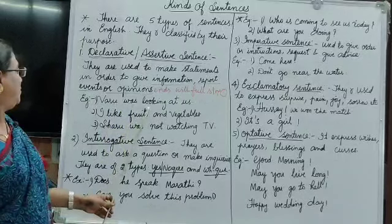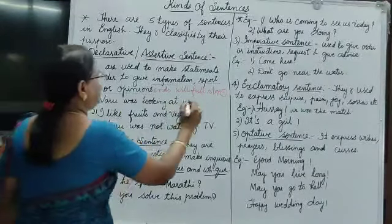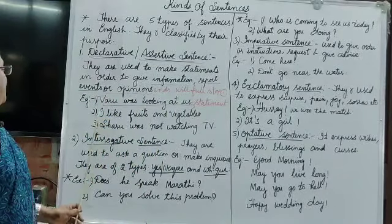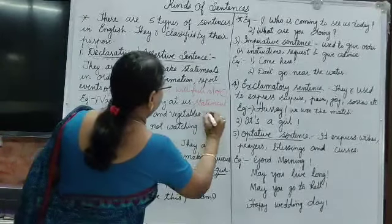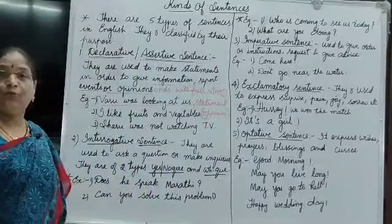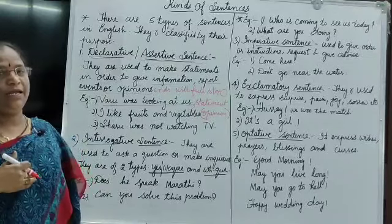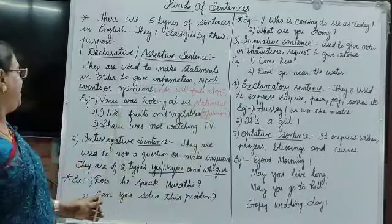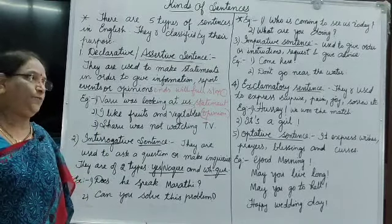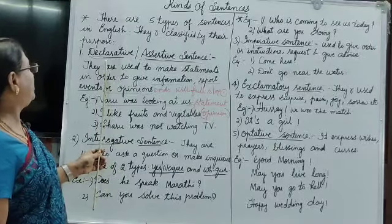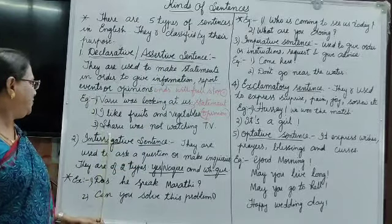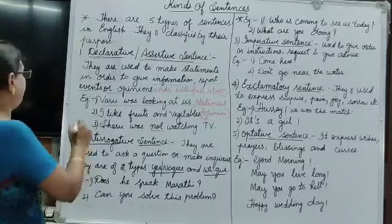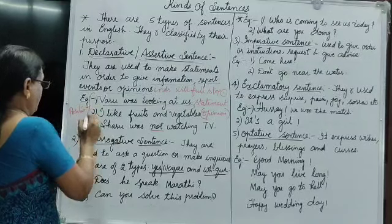For example: 'Varu was looking at us' — this is a statement. Another example: 'I like fruits and vegetables' — this is an opinion. We are expressing our opinion. There are also negative statements. In a declarative or assertive sentence there can be both positive and negative forms. For example: 'Sharu was not watching TV' — here 'not' makes it a negative statement.